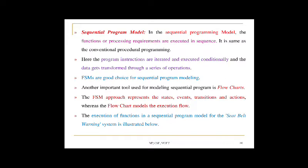The sequential program model executes functions or processing requirements in sequence, same as conventional procedural programming. Program instructions are iterated and executed conditionally, and data gets transformed through a series of operations. Finite state machines are a good choice for sequential program modeling. Another important tool is flowcharts. The FSM approach represents states, events, transitions, and actions, whereas the flowchart model represents the execution flow — illustrated here for the seat belt warning system.